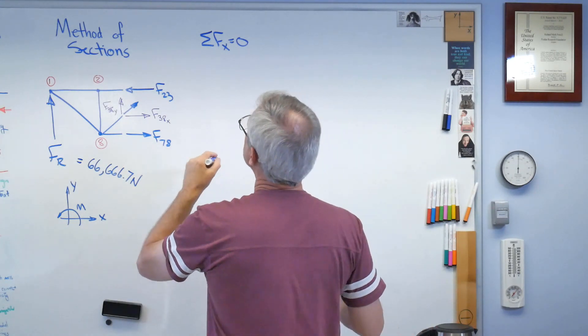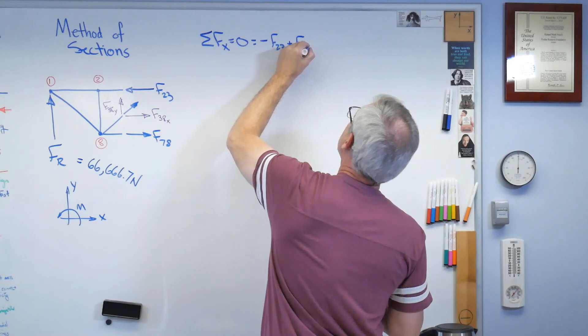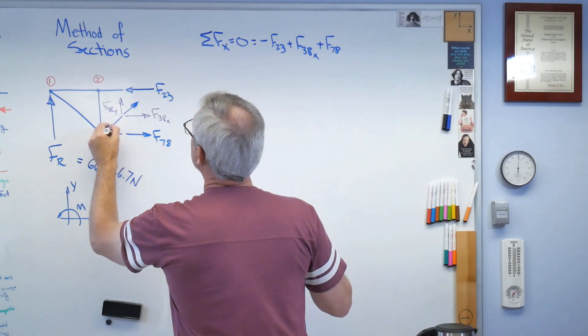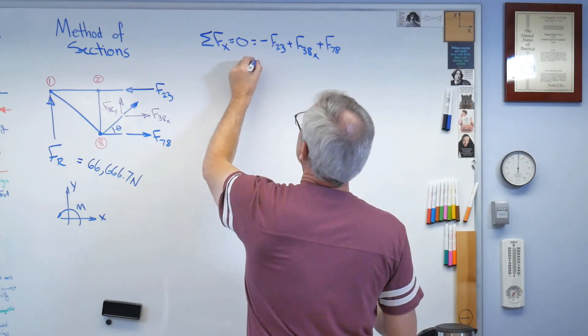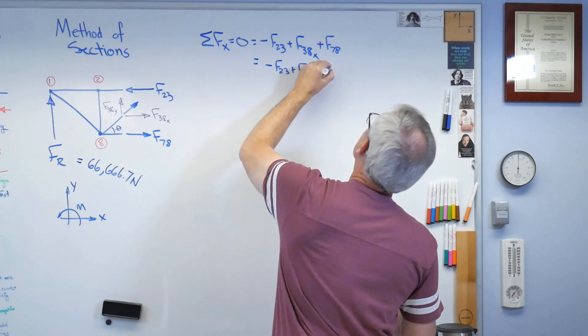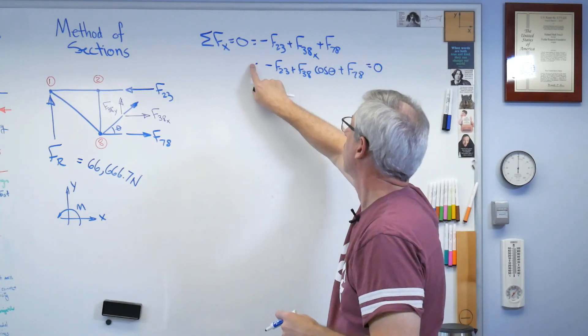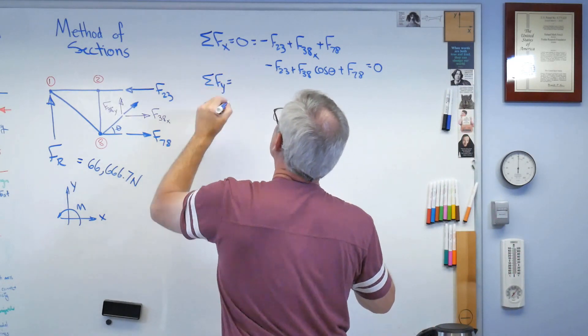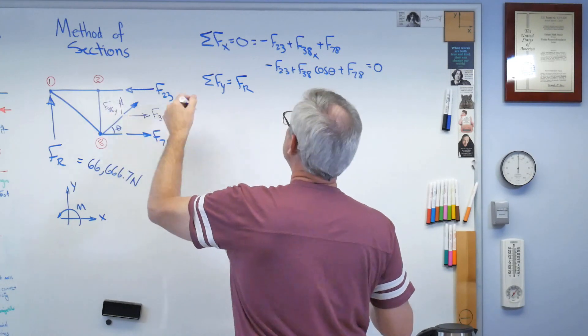Minus F23, plus F38x, and plus F78. I'm going to call that angle theta, and the nice part is theta is the same everywhere for this particular truss. So I can say minus F23, plus F38 cosine theta equals zero. There's equation number 1. Equation number 2 is sum of the forces in the y direction. So it's going to be Fr, that's positive. F38y is going to be F38 sine theta. Well, they can't both be positive. Something's got to be negative. Clearly, I drew that arrow in the wrong direction. That's okay.